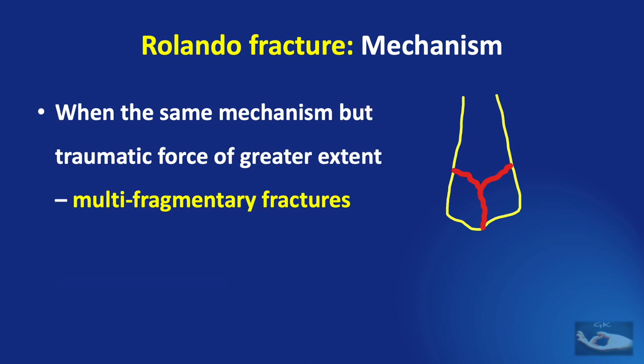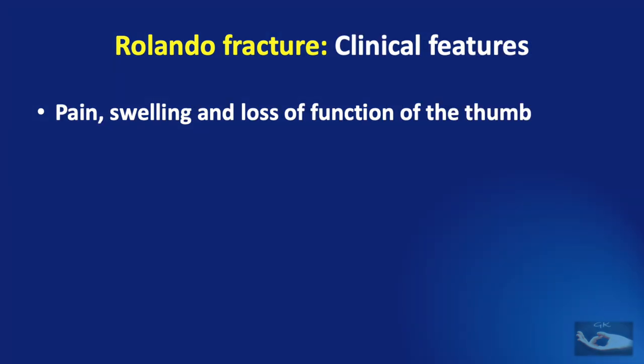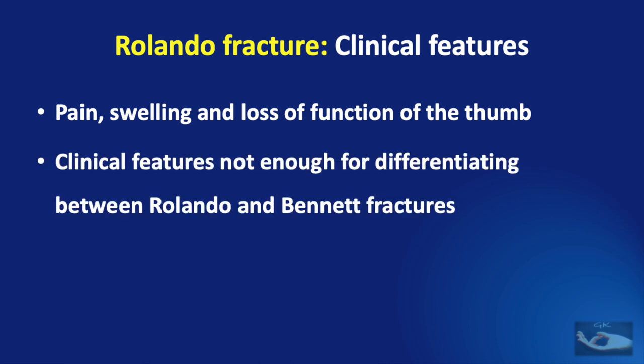When the same mechanism is applied with a traumatic force of a greater extent, multifragmentary fractures result. Pain, swelling, and loss of function of the thumb are characteristic clinical features, as in all fractures of the base of the first metacarpal bone. The clinical features are therefore not sufficient for differentiating between Rolando fractures, Bennett fractures, and comminuted fractures.